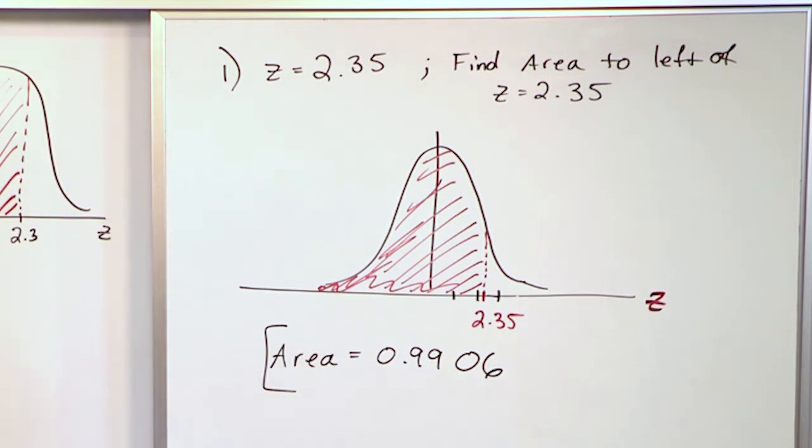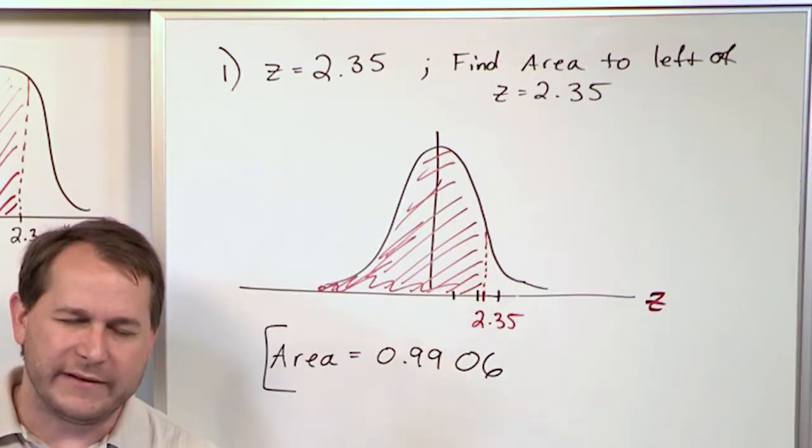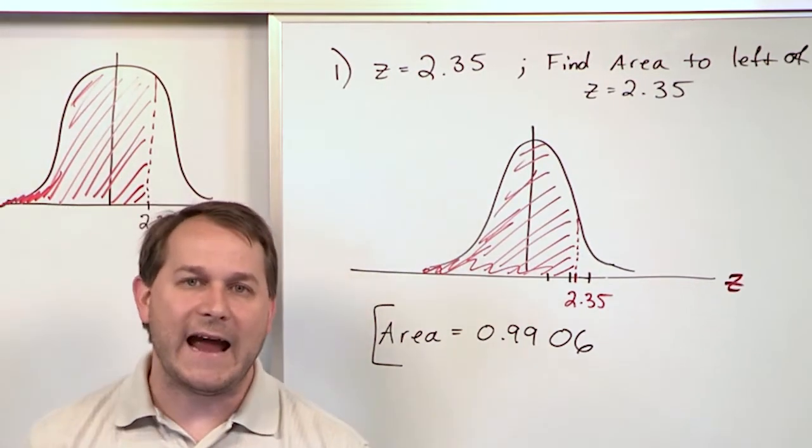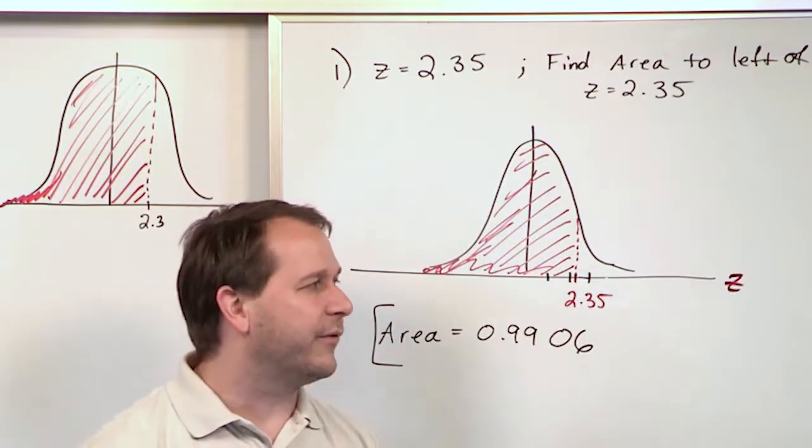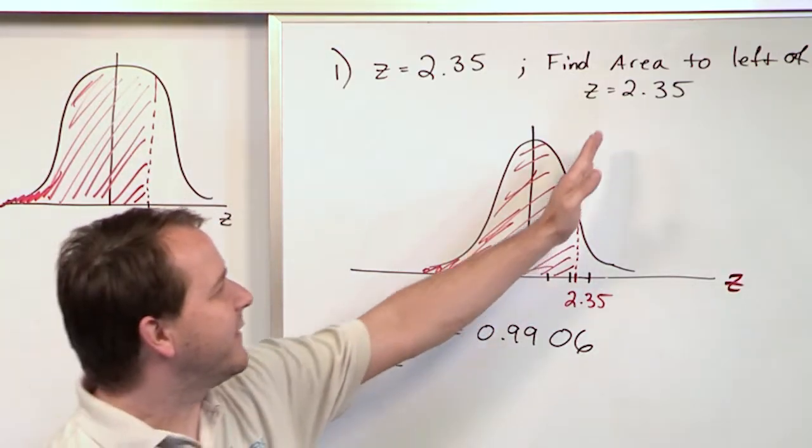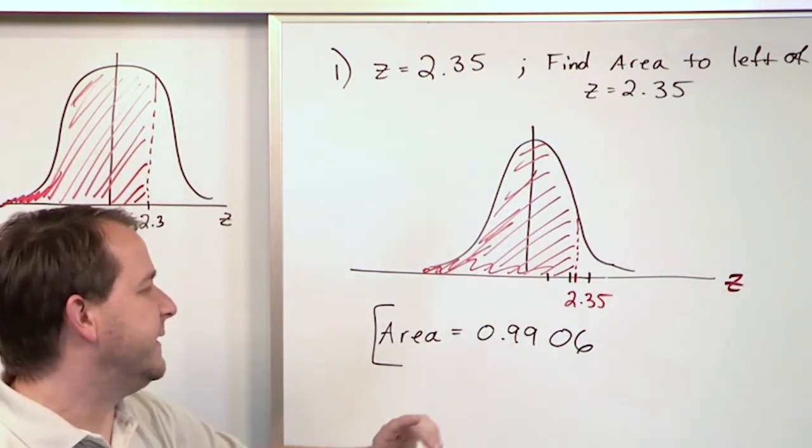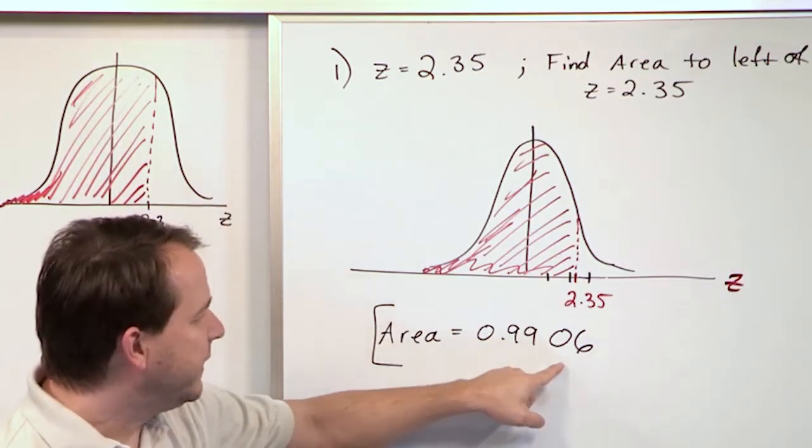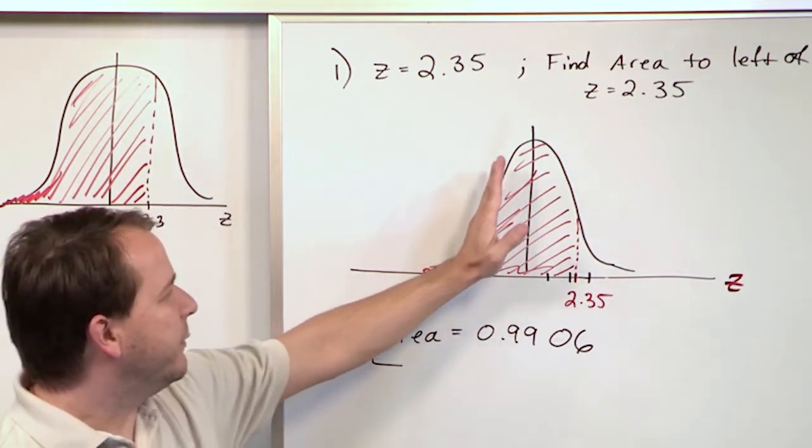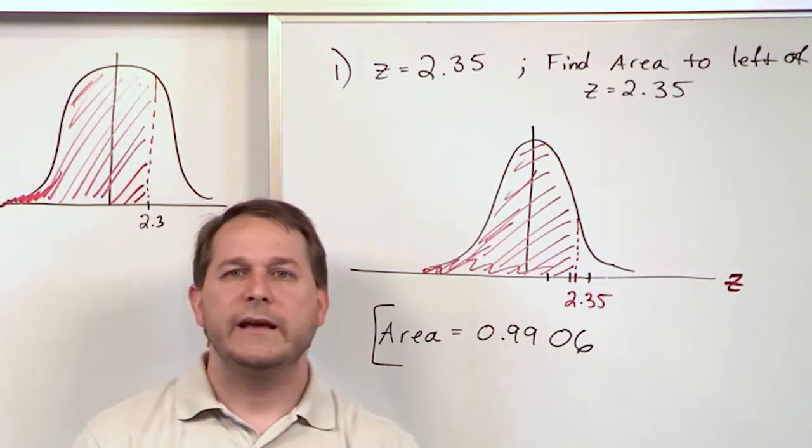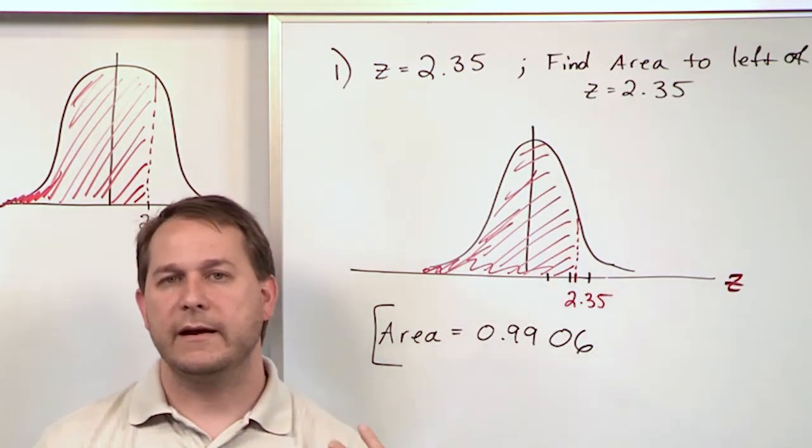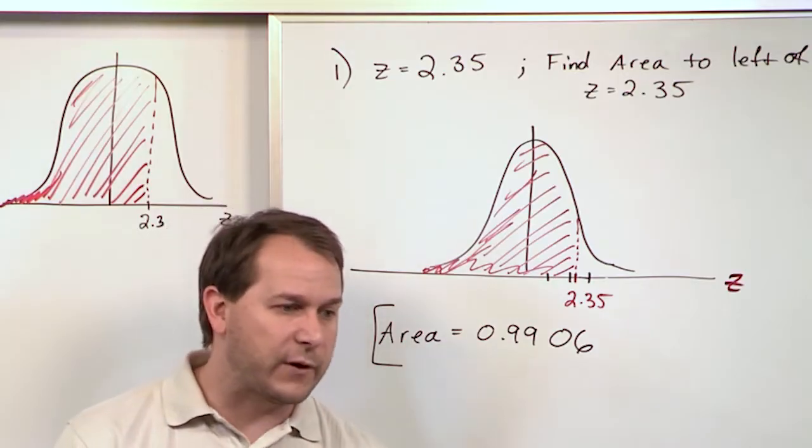Now, don't worry about necessarily what this means because we haven't locked it down to an actual word problem or a statistical problem. We're just learning how to use the table. So I'm telling you, give me the area to the left of the z value and we're finding this out. Now, this is a probability. Probability is what we get when we look at area under this curve here. It's a pretty high probability. But later on, we're going to be reading problems and it'll be phrased in terms of, find the probability,